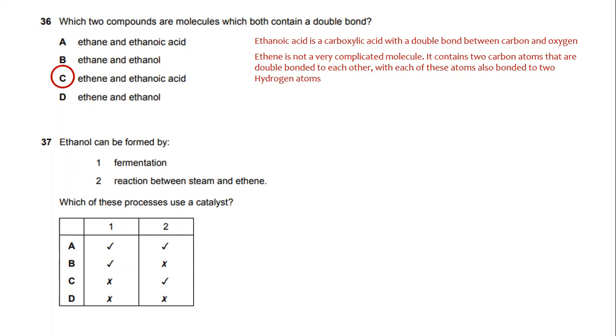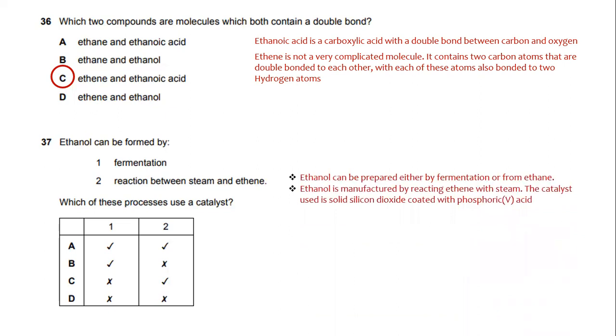Ethanol can be formed by fermentation and by the reaction between steam and ethene. Which of these processes uses a catalyst? Ethanol can be made by fermentation or by reacting ethene with steam. When reacting with steam, a catalyst is used. It's solid silicon dioxide coated with phosphoric acid. The answer for this question would be A.